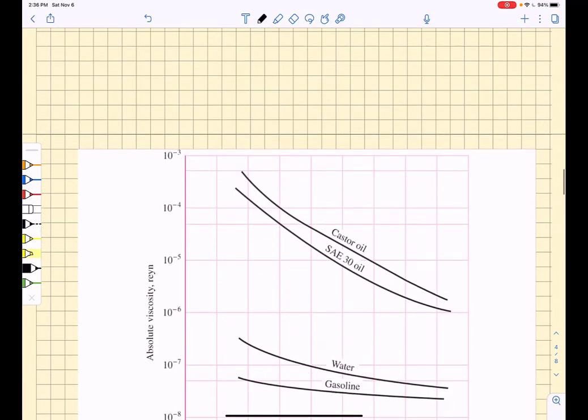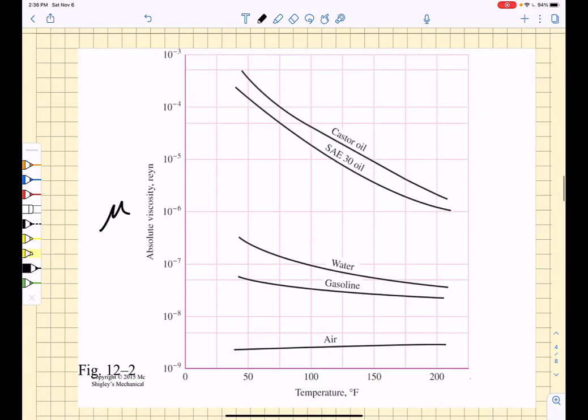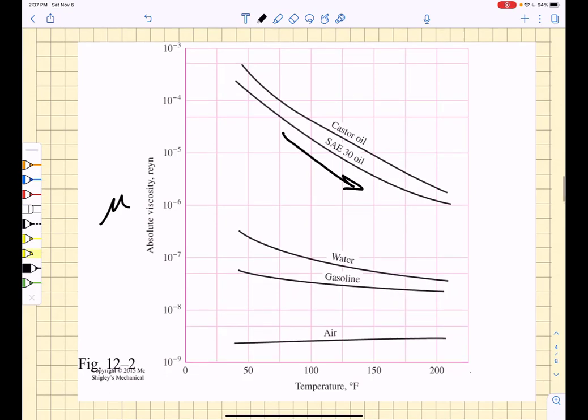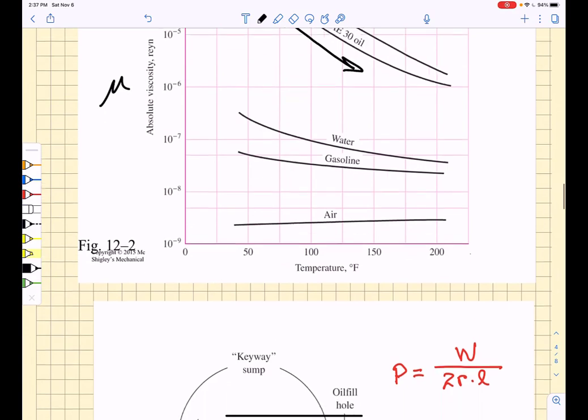But what I do want to talk about is how that absolute viscosity term mu varies with temperature. I show here a plot for a number of different fluids from castor oil to 30 weight motor oil, water, gasoline. You notice that most of them experience a change in viscosity. In fact, a drop in viscosity as the temperature goes up. That's an important thing because that viscosity is going to affect the friction and it's going to affect the spacing of the joint.